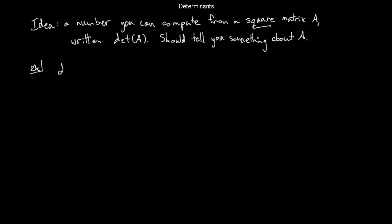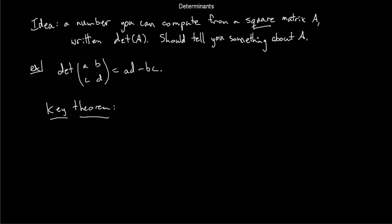We've seen determinants before for 2x2 matrices. The determinant of a 2x2 matrix A, B, C, D is AD minus BC. The key theorem is that A is non-singular if and only if the determinant of A is non-zero.